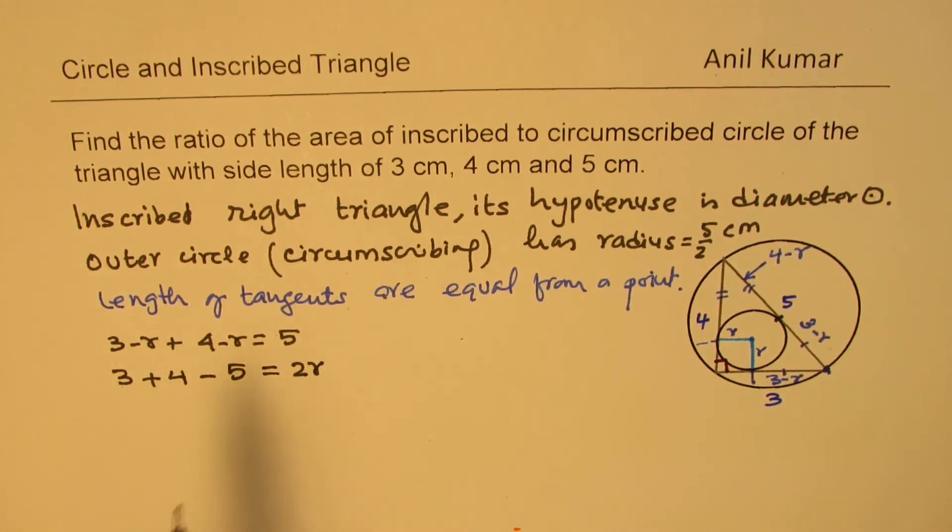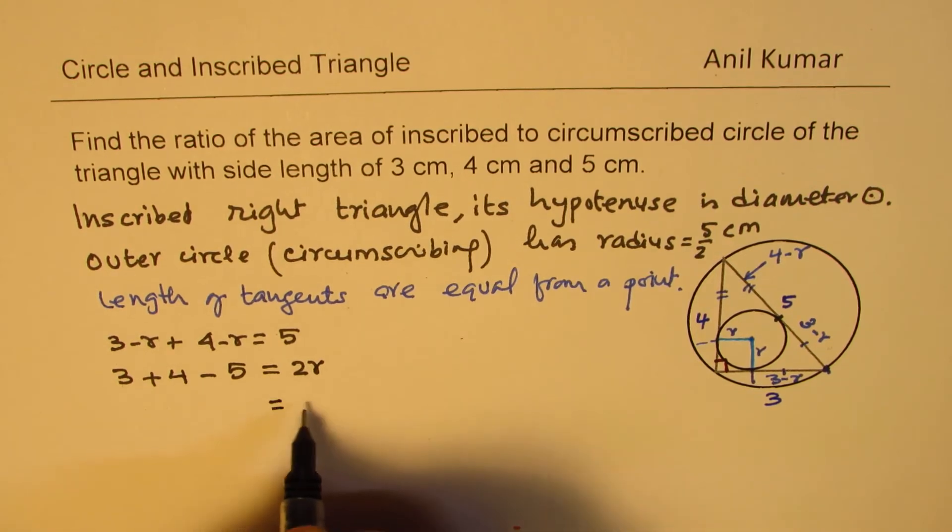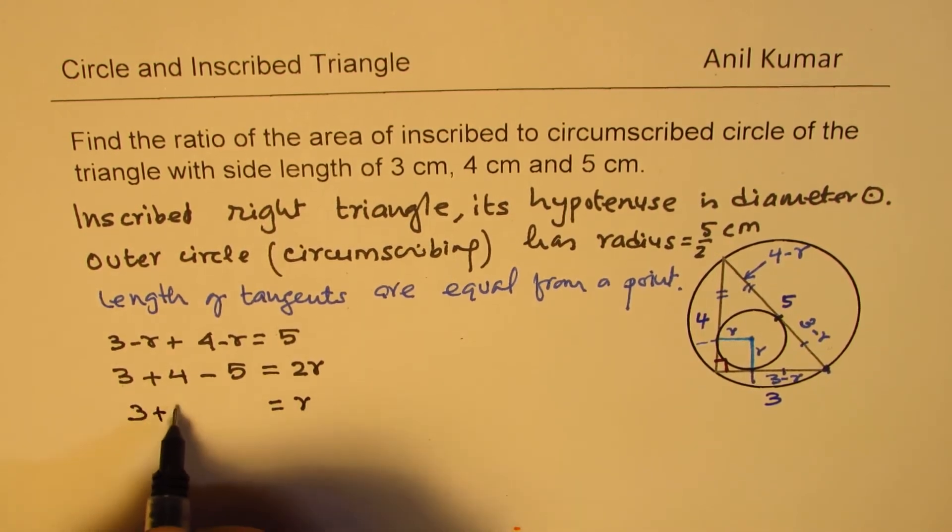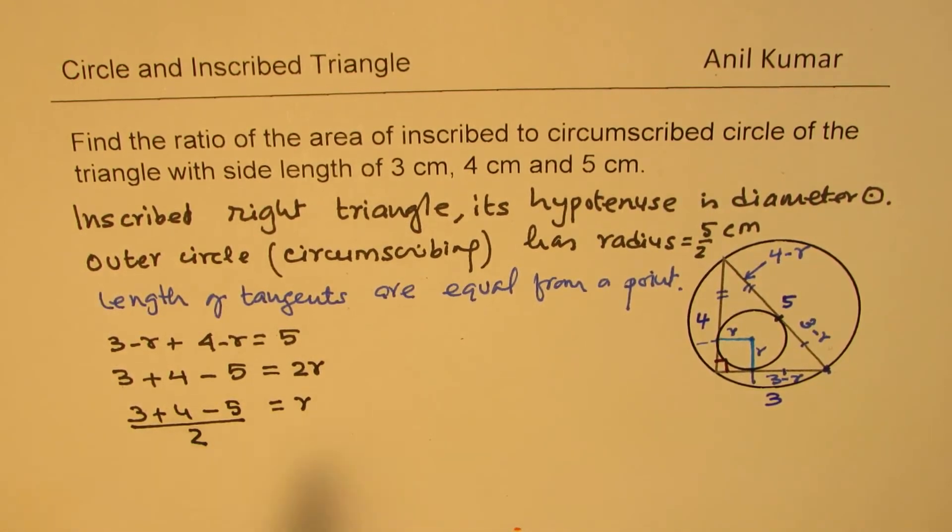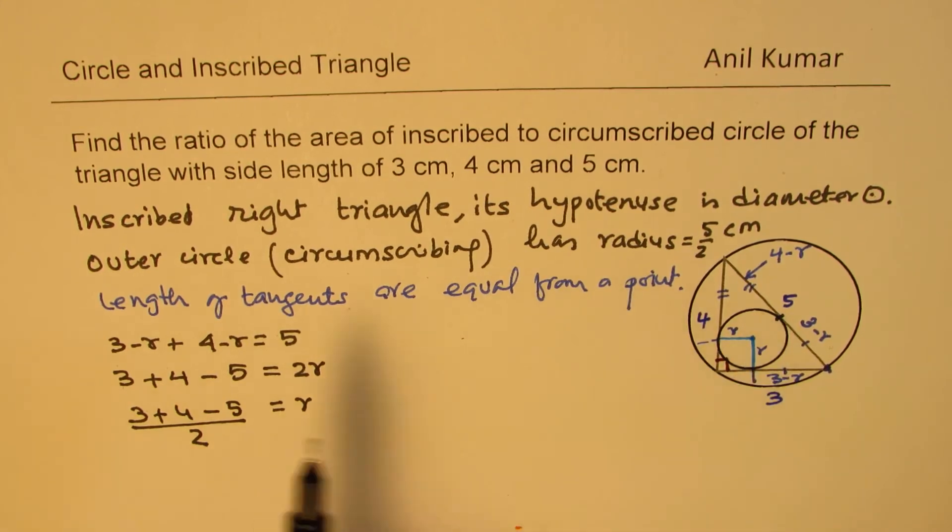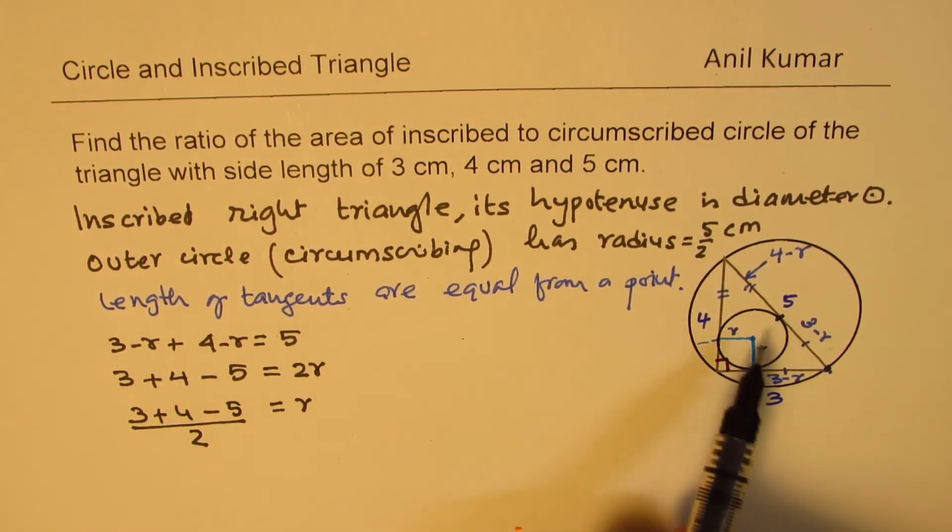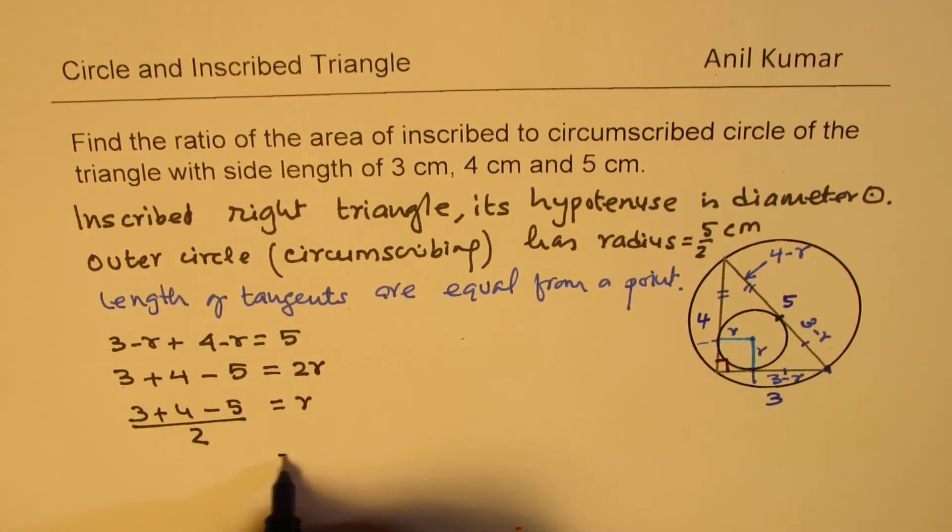So which is 7 minus 5. So let me rewrite this. r is 3 plus 4 minus 5 divided by 2. So this is a standard formula. If you have a right triangle inscribed in a circle, sum of two sides minus the hypotenuse divided by 2 gives you the radius of inscribed circle. So which is definitely equal to 7 minus 5 is 2 divided by 2 is 1 unit. So the radius of this circle is just 1 unit.